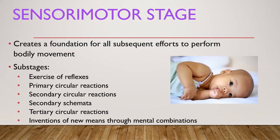The sensorimotor stage creates a foundation for all subsequent efforts through body movement. Its sub-stages are: exercise of reflexes, primary circular reactions, secondary circular reactions, secondary schemata, tertiary circular reactions, and invention of new means through mental combinations. This stage typically takes place within the first two years of a child's life. At this point, children use their senses to learn about themselves and their environment. For example, a baby might giggle or smile because they perceive something as funny or interesting.